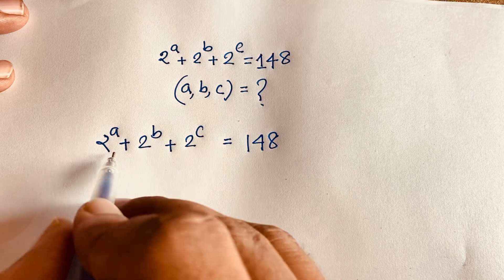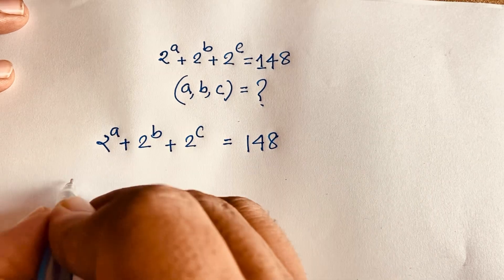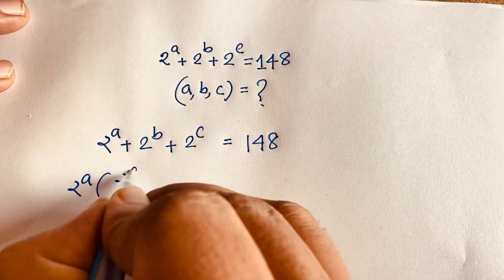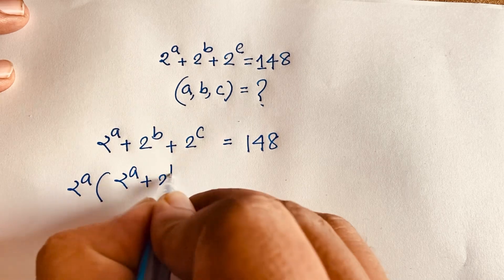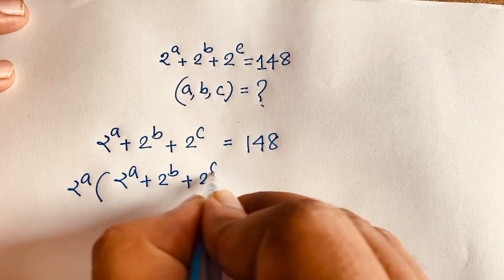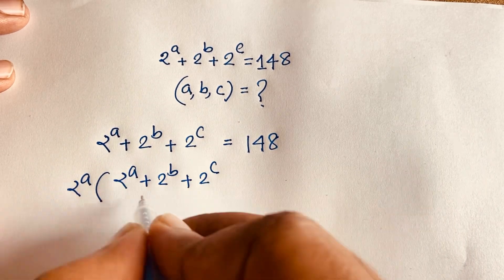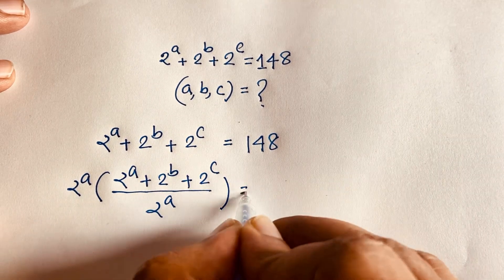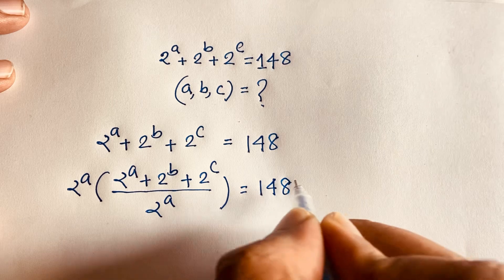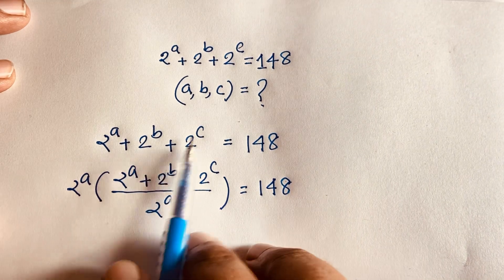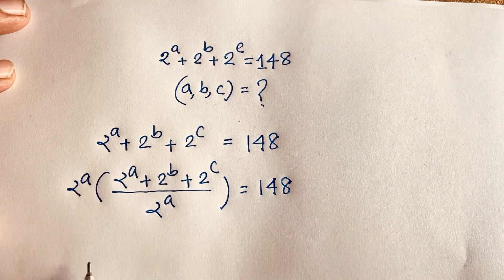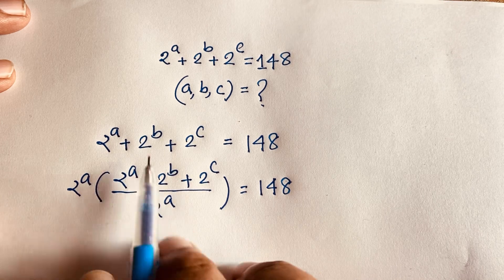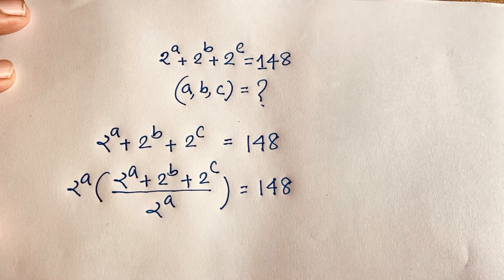I multiply this value by 2^a, so 2^a times (2^a + 2^b + 2^c) divided by 2^a is equal to 148. I multiply by 2^a and again divide by 2^a, so the 2^a cancels and we get back the previous line.